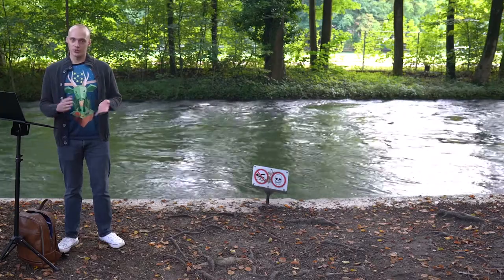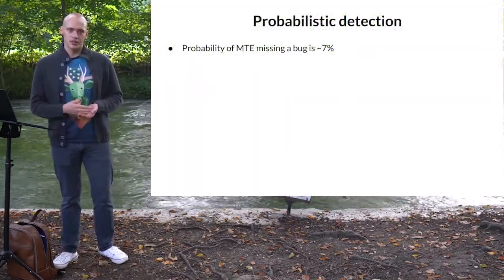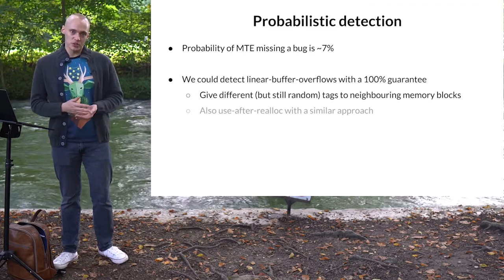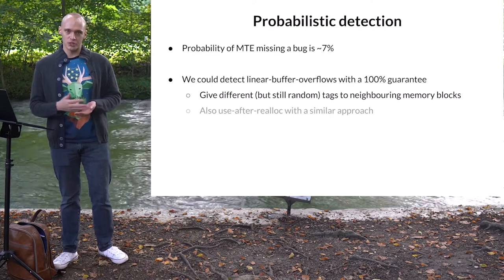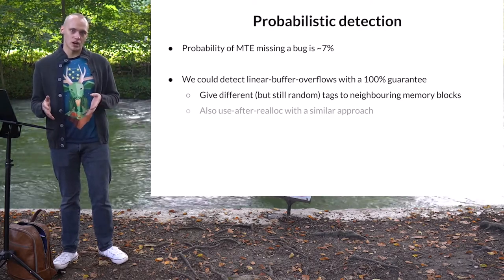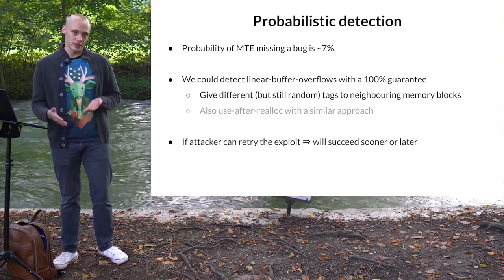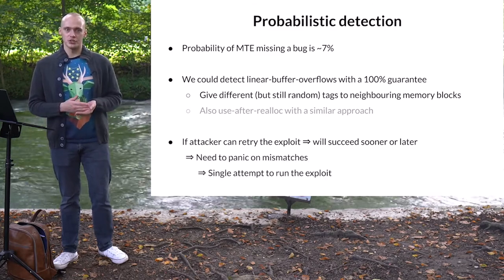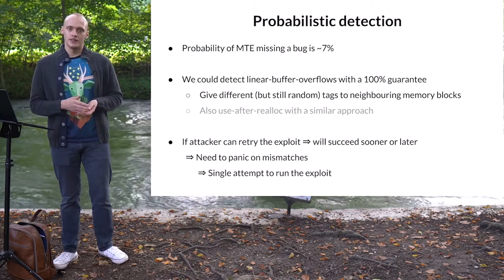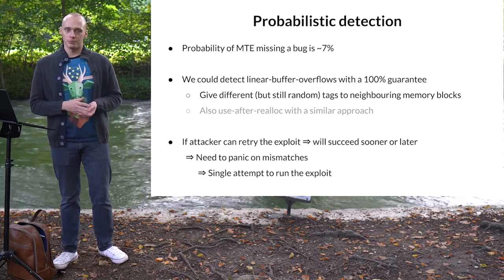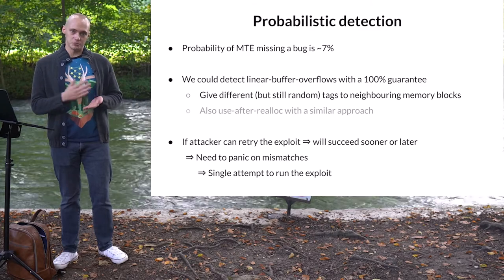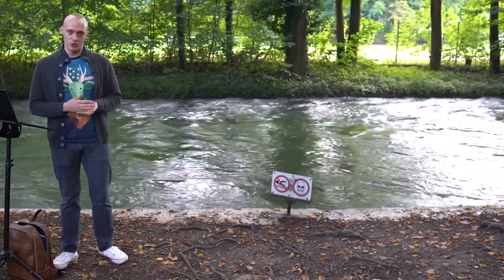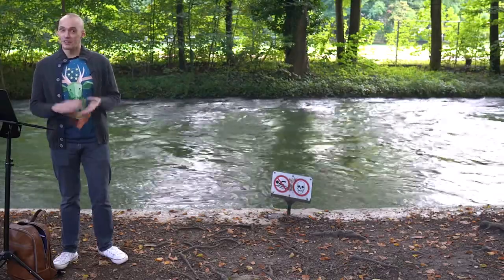I also mentioned that the ability of MTE to detect memory bugs is probabilistic. If tags happen to match during a wild memory access, MTE will not catch it. There are some improvements we can make for certain bug types — like for linear buffer overflows, we can ensure that generated tags for neighboring objects are always different. But generally, if the attacker can retry the exploit multiple times, at some point the tags will match. The way to deal with this is to panic the kernel on the first tag mismatch, giving the attacker only a single attempt. The probability of tags matching on the first try is very low, especially if the exploit requires more than one pair of tags to match. As MTE has no false positives, panicking the kernel will not lead to stability issues.